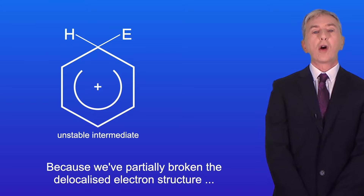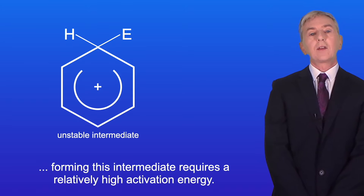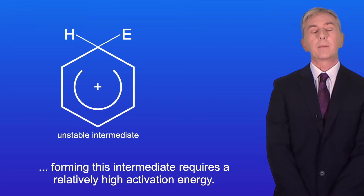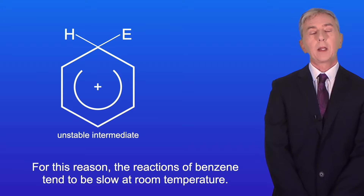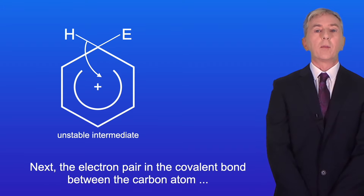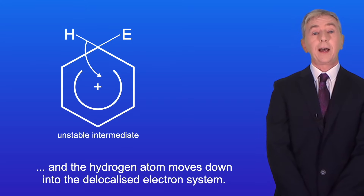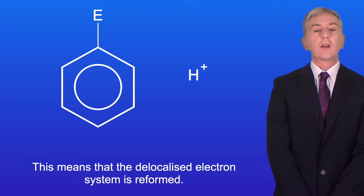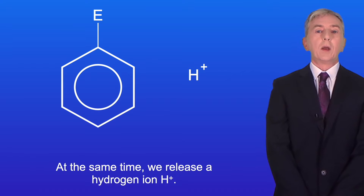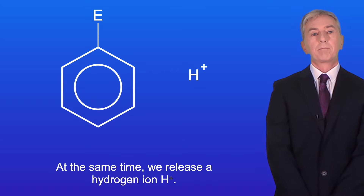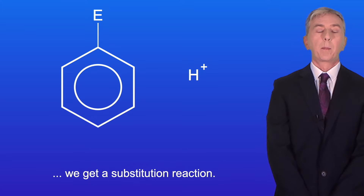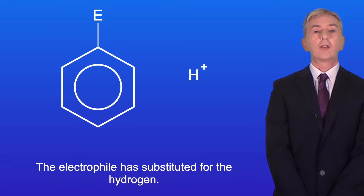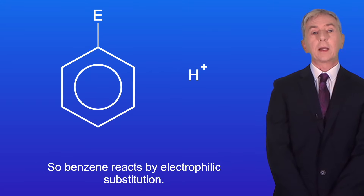Because we've partially broken the delocalized electron structure, forming this intermediate requires a relatively high activation energy, and for this reason the reactions of benzene tend to be slow at room temperature. Next, the electron pair in the covalent bond between the carbon atom and the hydrogen atom moves down into the delocalized electron system. This means that the delocalized electron system is reformed. At the same time we release a hydrogen ion H+. So when benzene reacts with an electrophile, we get a substitution reaction — the electrophile has substituted for the hydrogen. So benzene reacts by electrophilic substitution.